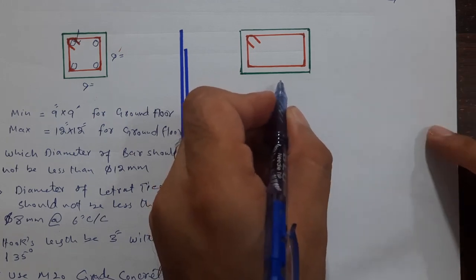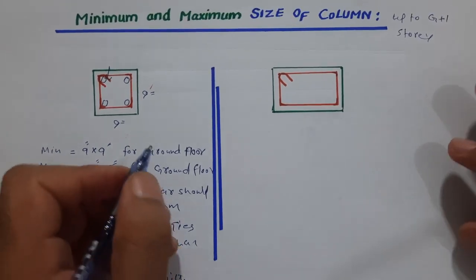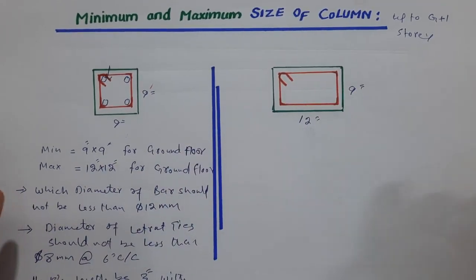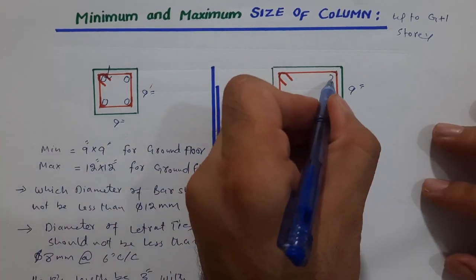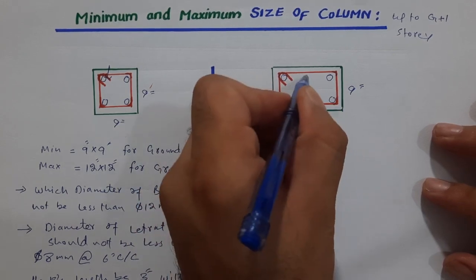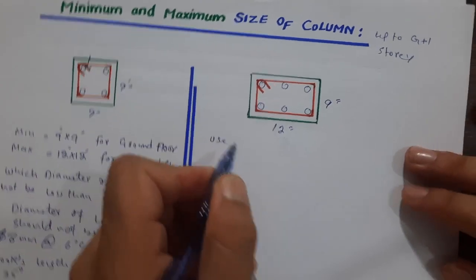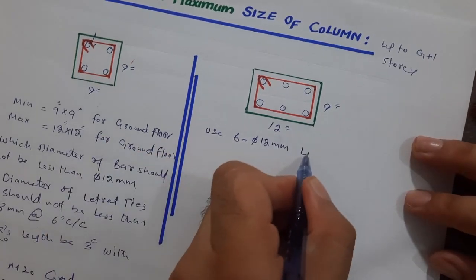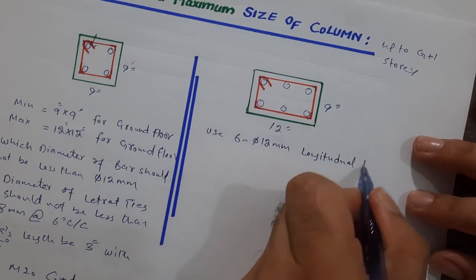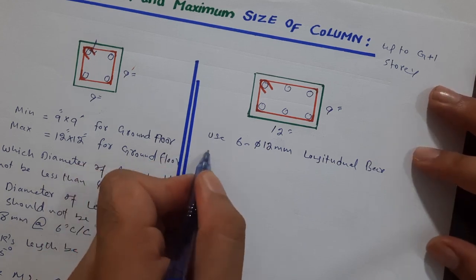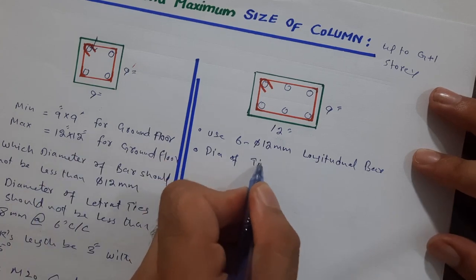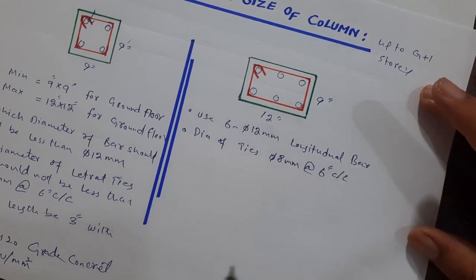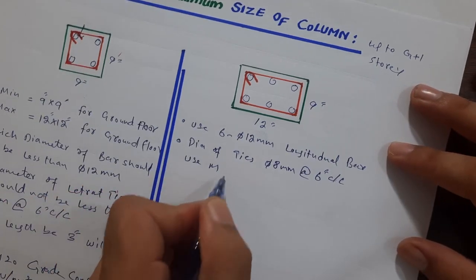For G plus one with normal residential structure load, the suitable standard size of RCC column is 12 by 9 inches, using six numbers of steel rods — six numbers diameter 12 millimeter longitudinal bars — and ties of 8 millimeter diameter with spacing of six inches center to center. Use M20 grade concrete.